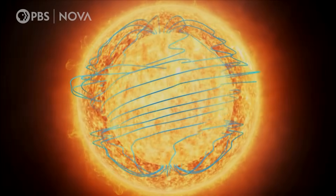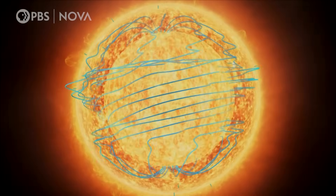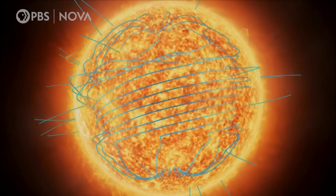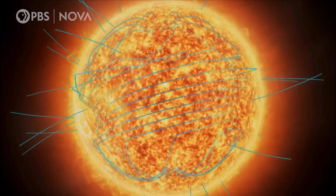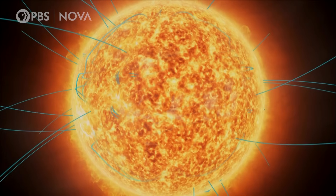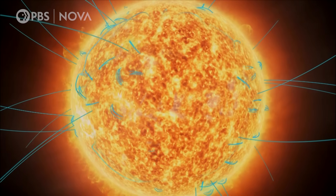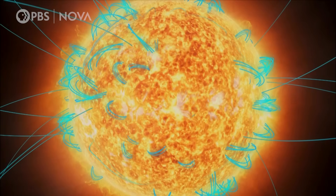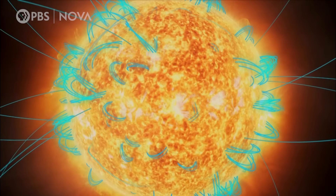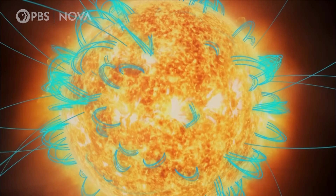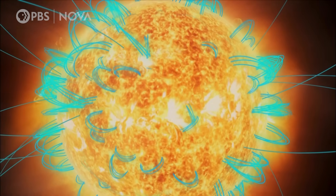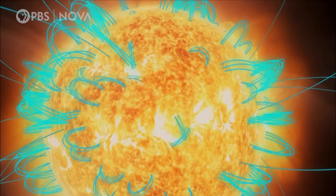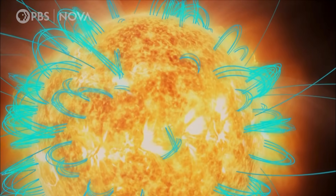Until some break through the Sun's photosphere into the corona, where they form giant arches called coronal loops. Because these magnetic fields trap electrically charged particles, they show up as the bright lines and loops of plasma we see in the corona.